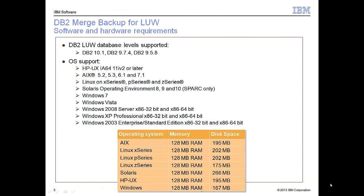The software support level for DB2 Merge Backup on Linux, Unix, and Windows is DB2 10.1, or DB2 9.7.4, or DB2 9.5.8. For the non-10.1 versions, we need those particular levels in order to support the recovery history file of a new type — Type Backup M for Merge.